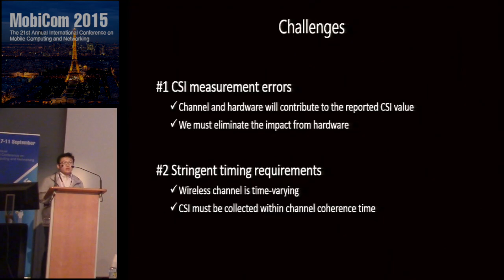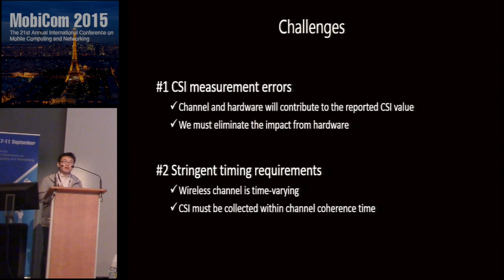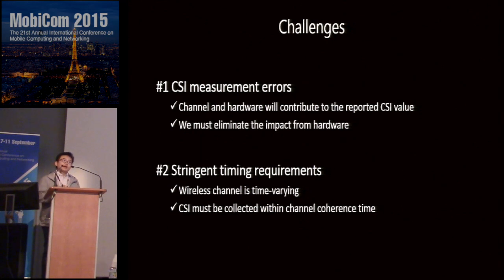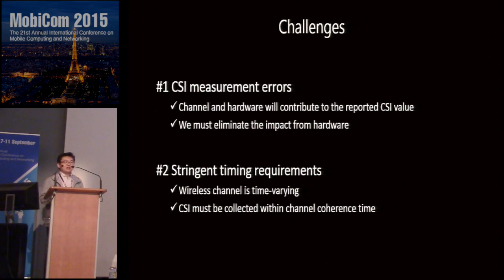When we tried to implement this system on commodity Wi-Fi, we met several challenges. The first is errors: the CSI reported by commodity Wi-Fi is not accurate, and without removing those errors we cannot combine the CSI in the frequency domain. The second challenge is that when collecting CSI from multiple channels, we assume the channel is relatively stable, but the channel is always changing, imposing a timing requirement on our CSI collection.